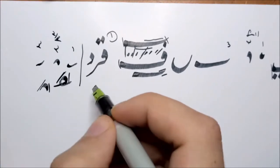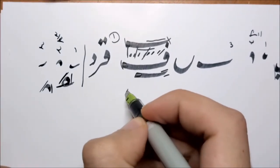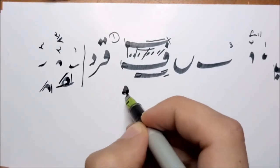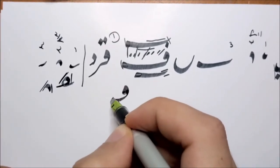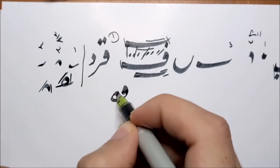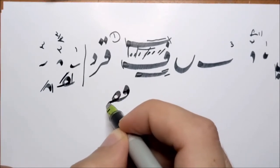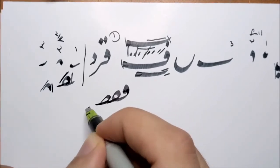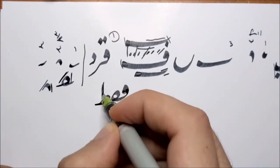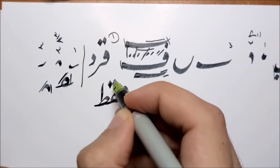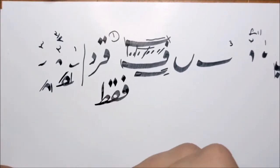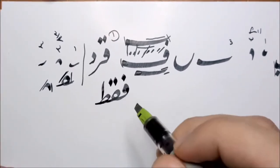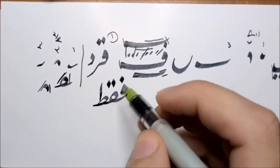So if you were to write Faqat. We have Fa. Then we connect it to a Qaf. Then we connect it to a Ta. Faqat. This way we get the middle, the middle of Fa. We can also write Ghafar.